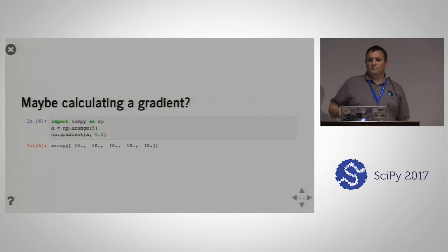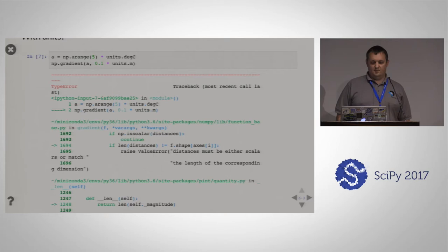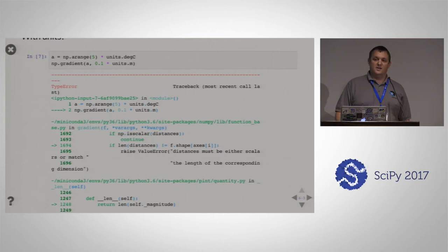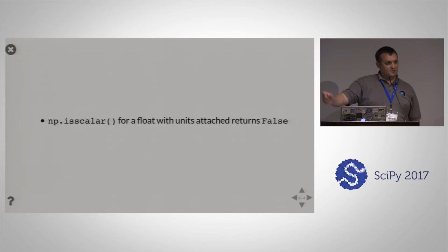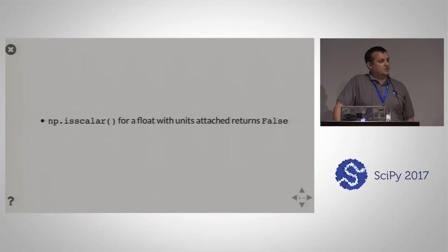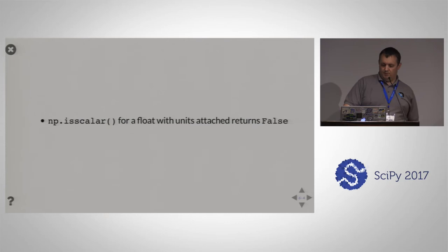What about calculating a gradient? With just an array of data we get the expected result. But if we take an array of degrees Celsius and try to take a gradient, we get a TypeError. The traceback doesn't help understanding what's going on. The root cause is a call to numpy.isscalar — because I gave it a float for grid point spacing, and because it's wrapped in a Pint quantity, NumPy says that's not actually a scalar, treats it like an array, goes down the wrong code path, and everything blows up.